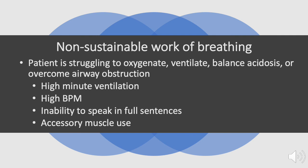Struggling patients demonstrate any or all of the following characteristics: a high minute ventilation with an increased number of breaths per minute, an inability to speak in full sentences, and obvious accessory muscle use. Pathologic examples include status asthmaticus and severe metabolic acidosis.